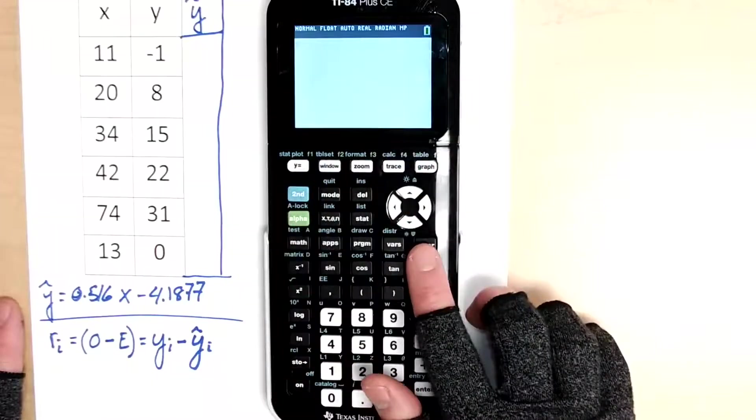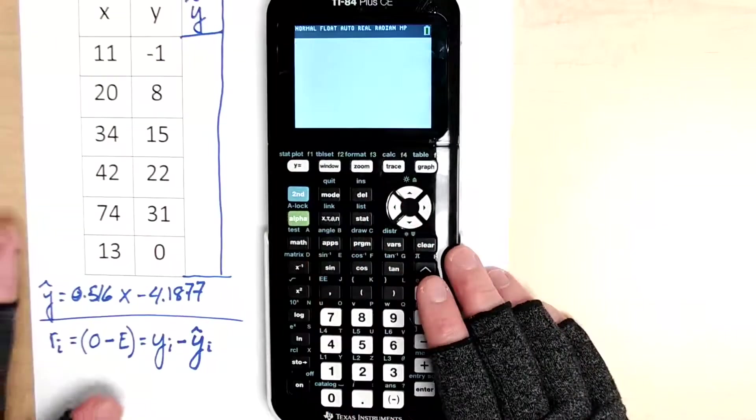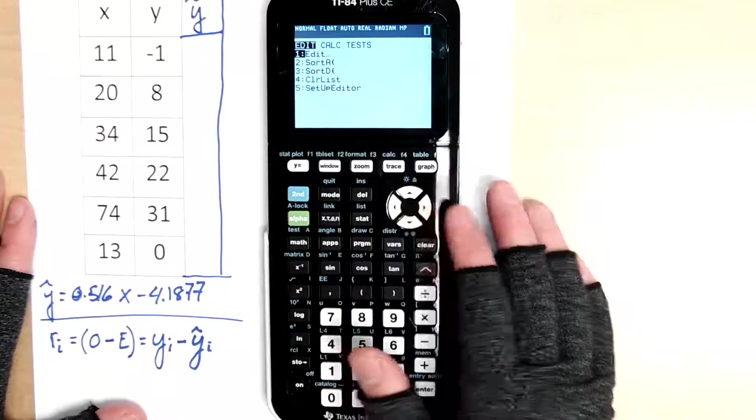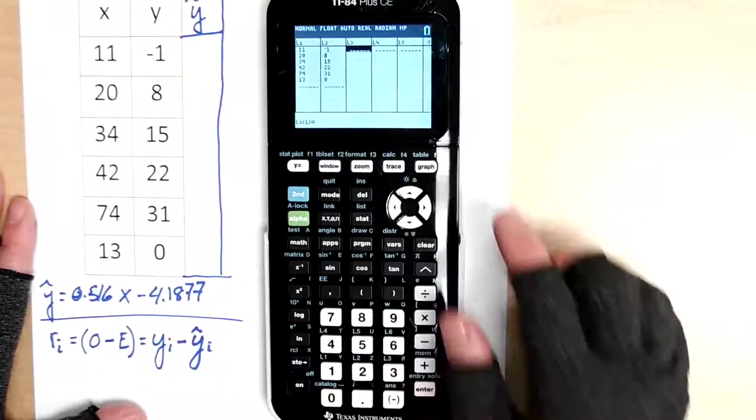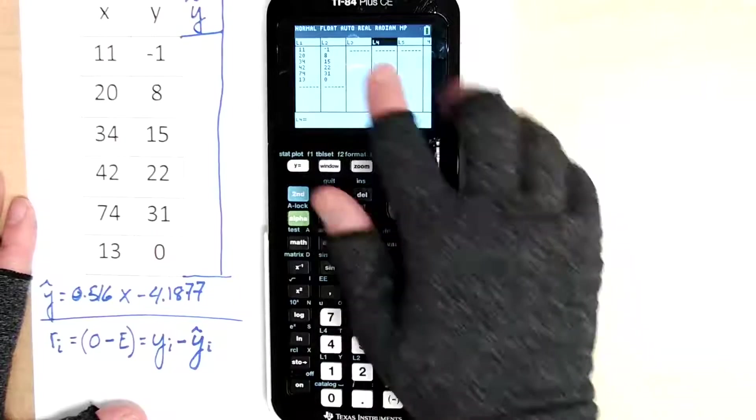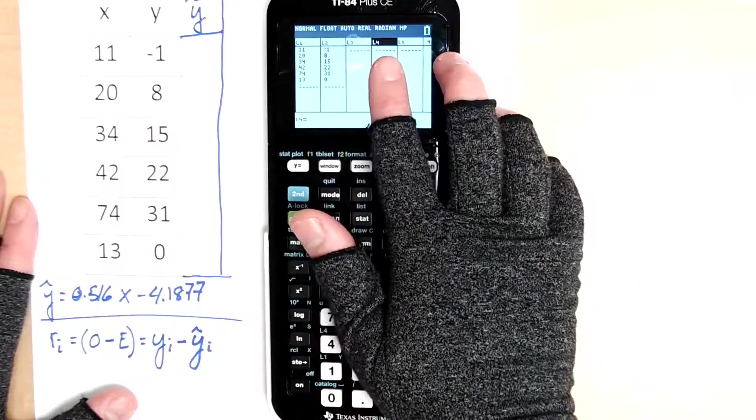So I'm going to hit second quit. Don't hit clear right there, we'll clear out your equation. And what I'm going to do is I'm going to go back to stats. And I'm going to go back to a blank column. So here in L4, I'm going to put the residuals here in L4.